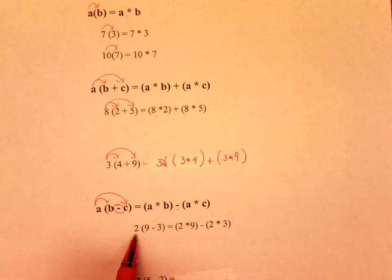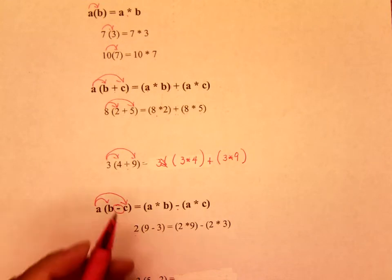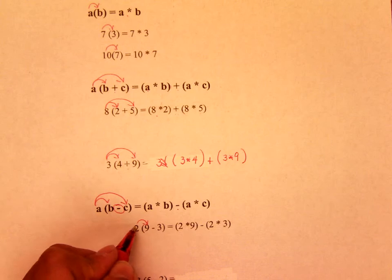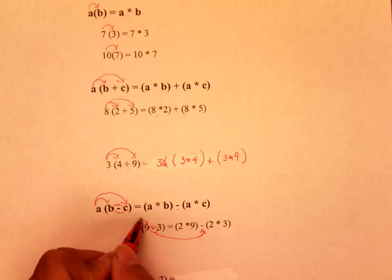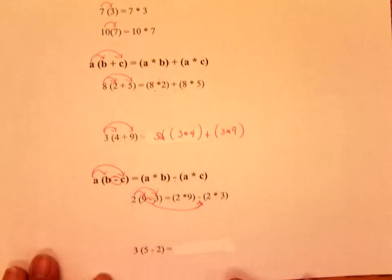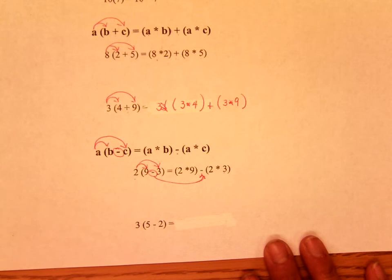So here, in number sense, you have 2 times 9, subtract, you'll see a subtraction, and 2 times 3. So go ahead and try the bottom one, see if you understand. When you're ready, push play.